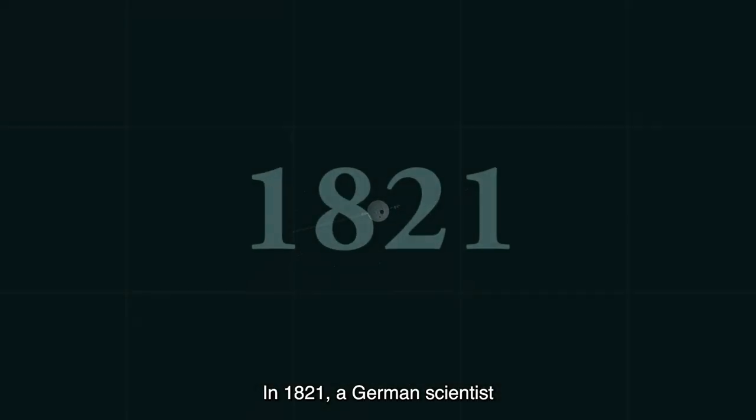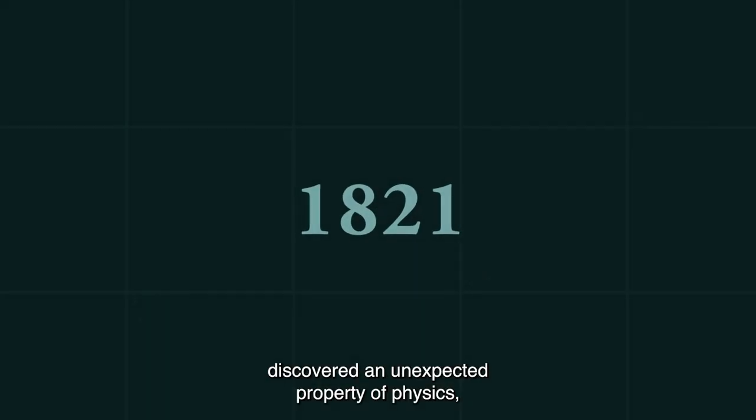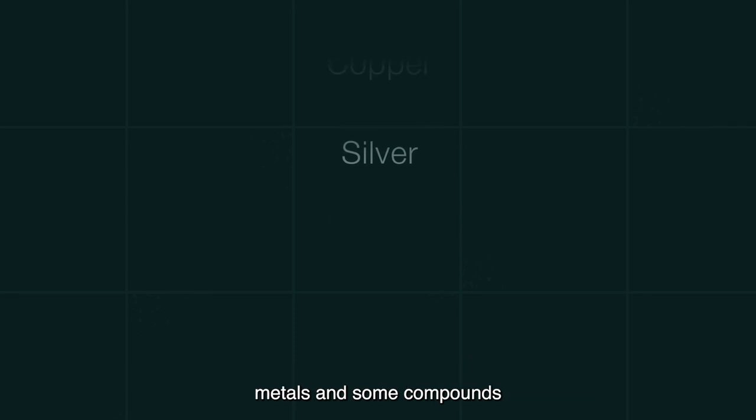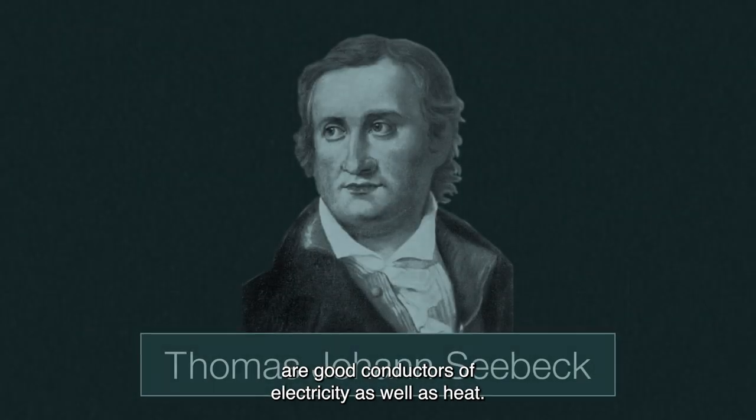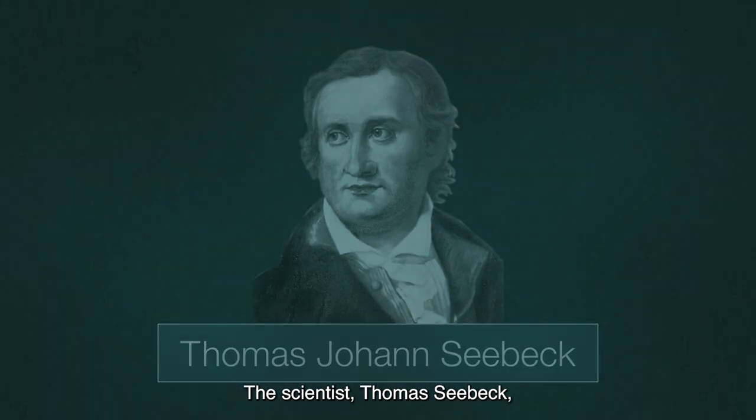In 1821, a German scientist discovered an unexpected property of physics—metals and some compounds are good conductors of electricity as well as heat. The scientist, Thomas Seebeck,